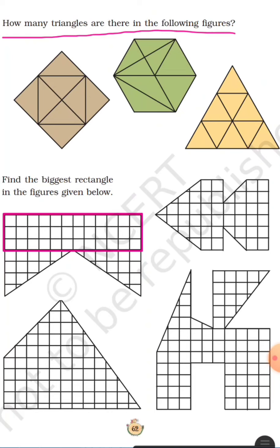So count these triangles. First of all we count small triangles. This is 1, 2, 3, 4, 5, 6, 7, 8. So the small triangles you have to count: 8.